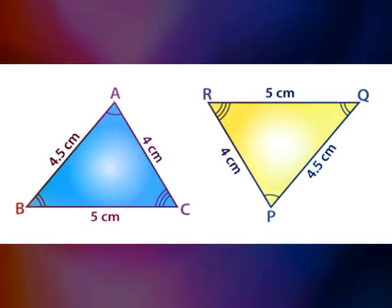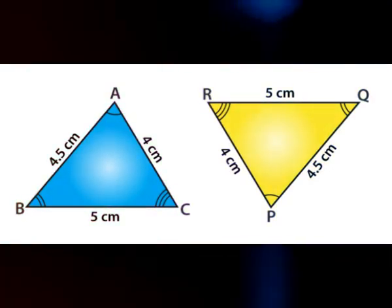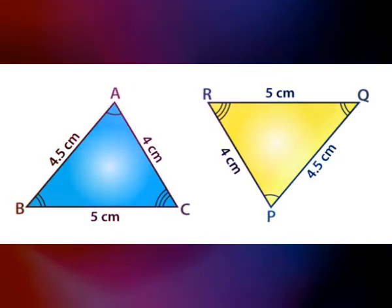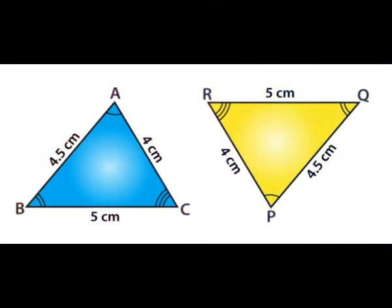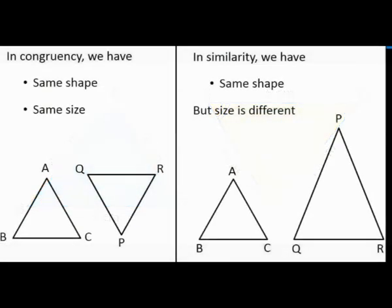We do not necessarily need to measure all three sides and three angles of two triangles to determine whether they are congruent or not. So in congruency we have the same shape and the same size, as you can see in this picture.